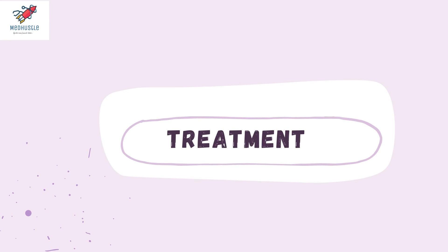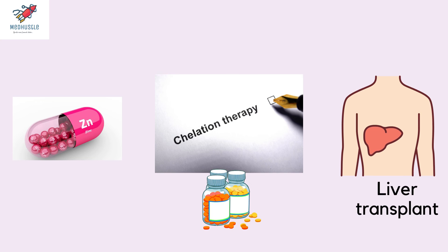For treatment, diets rich in copper like chocolates, mushroom, and seafood need to be avoided. Treatment with zinc decreases copper absorption from the gut. Copper chelators are also used, including D-penicillamine and trientine, which help by increasing copper excretion. Decompensated liver disease and a score more than 9 on Nazar's prognostic scoring system indicate the need for liver transplant.